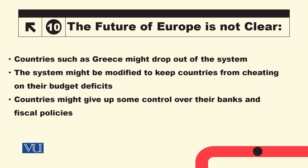The future of the Eurozone is not clear. Countries such as Greece might drop out of the system, and poor-performing countries may be removed. The system might also be modified to keep countries from cheating on their budget deficits, or countries might give up some control over their banks and financial policies.